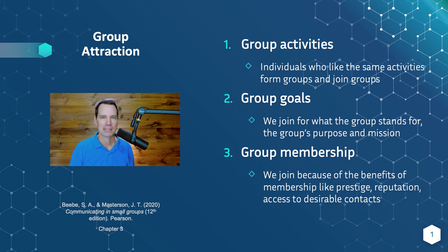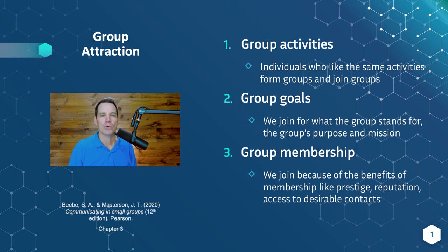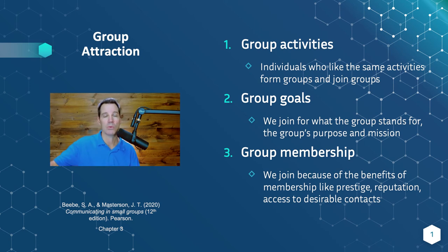A lot of people will also join groups for desirable contacts. There's a movie with Reese Witherspoon — Legally Blonde — where she was in a sorority and later became a lawyer. She ended up having all these great contacts from the sorority, so when she went out to become a lawyer, she drew on those relationships and contacts from the group to help her figure out some legal process that she eventually got a victory in. We often know this ahead of time — it's one of the reasons why people join fraternities, sororities, and certain professional networking groups, because you want access to desirable contacts and you know that by joining this group you'll be introduced to the people you want to meet.